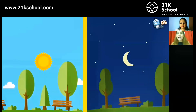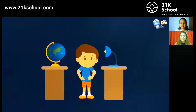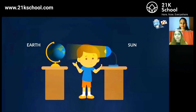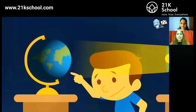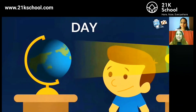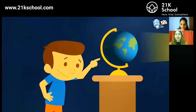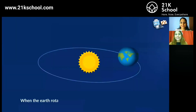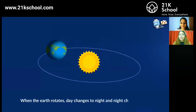Okay, now let's see how do we get day and night. Let's assume this globe is Earth and this lamp is the Sun. Where the light falls is the daytime.